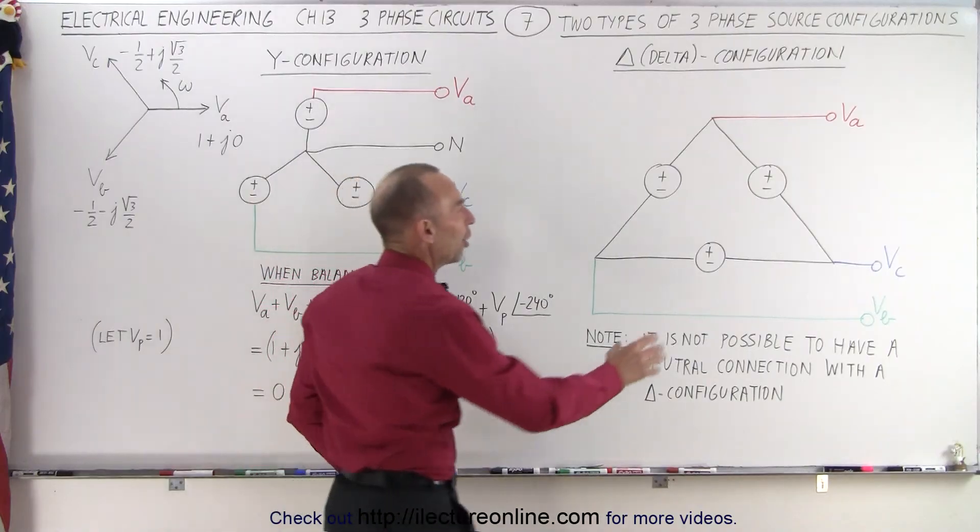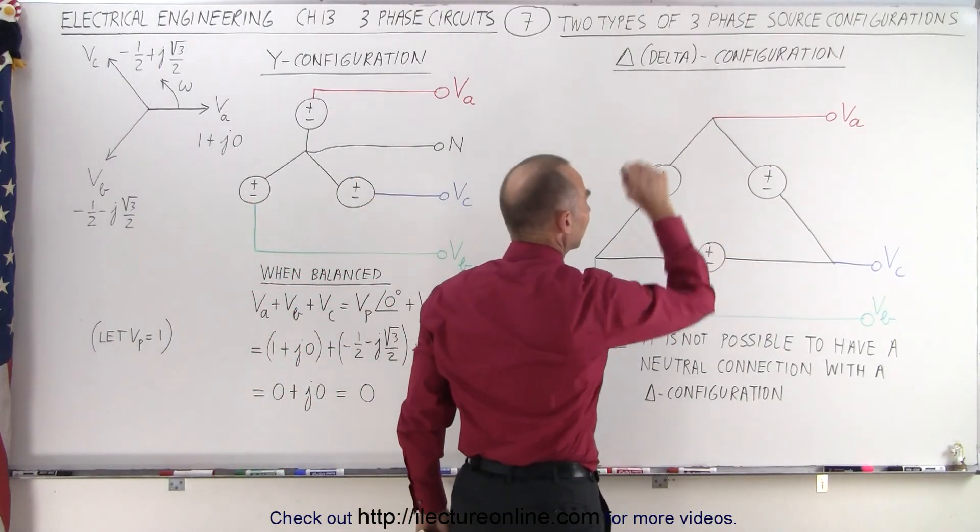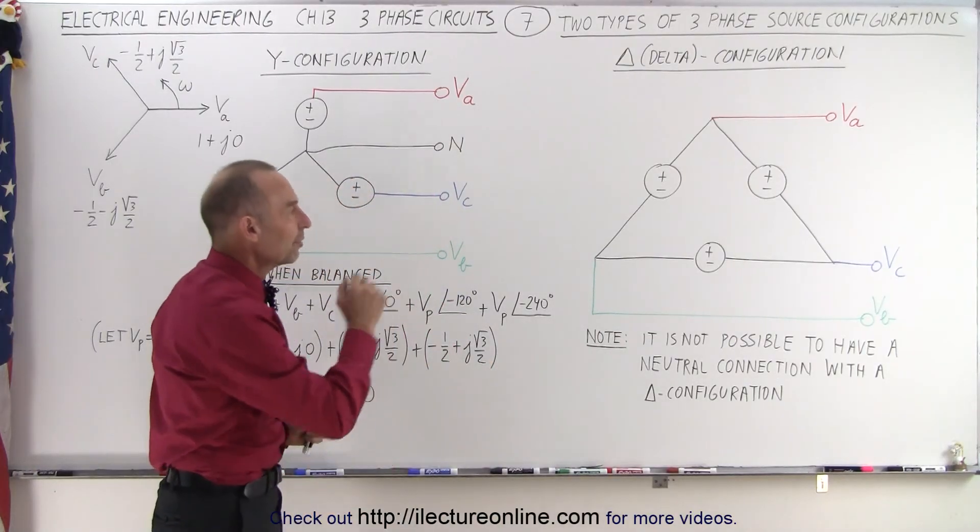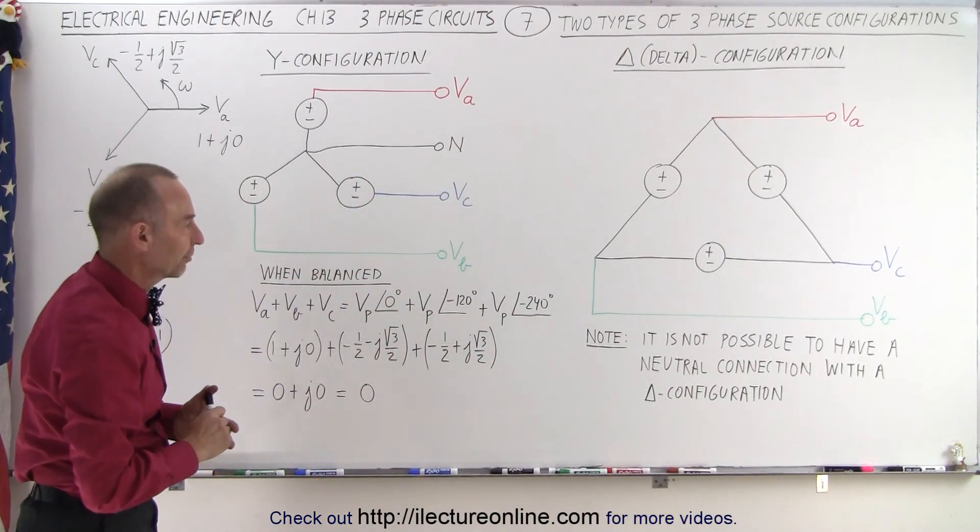We cannot have a neutral connection when we have a delta configuration. So note, it is not possible, physically not possible, to have a neutral wire on a delta configuration.